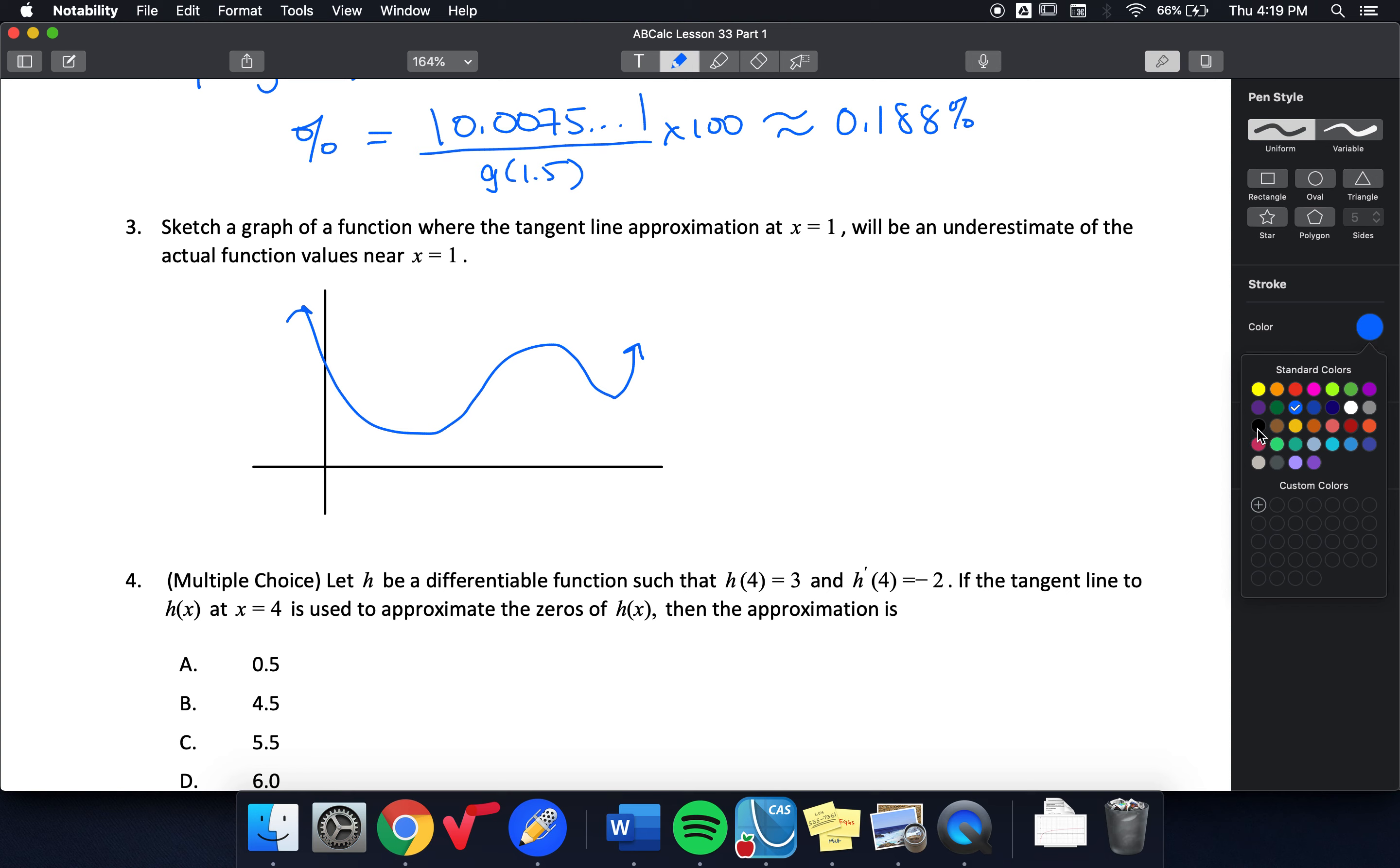So I'm going to label x equals 1 over here. I'm going to draw in a tangent line. So when x equals 1, my tangent would be here, except it would be actually touching. And so there's my graph where the tangent line is an underestimate of the values near 1.